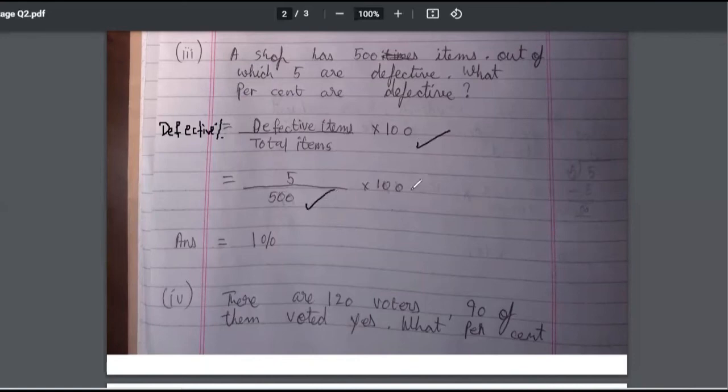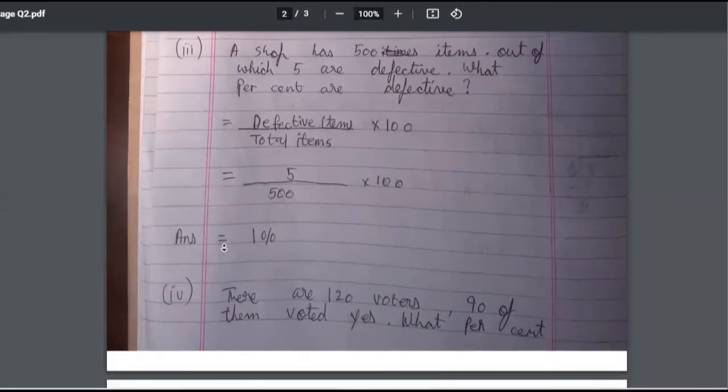Very good. So we can just simply write defective percent. Okay, for simpler reason, defective items upon total items. Yeah, very good. Zero zero got cancelled. Okay, so cancel this part also. Now then only it will be 1 percent. Good. Okay, good.